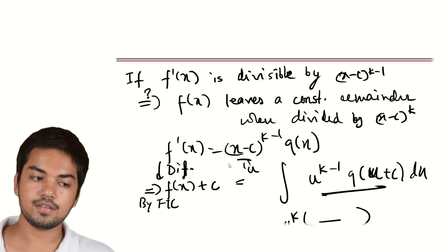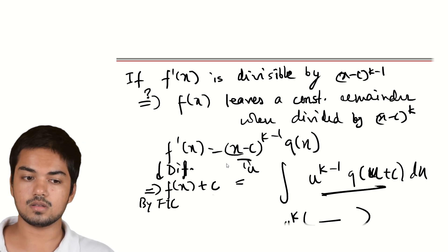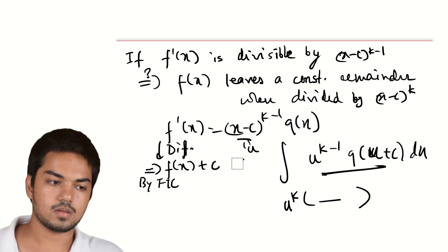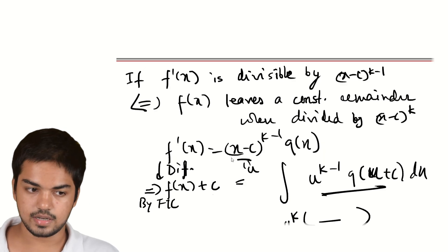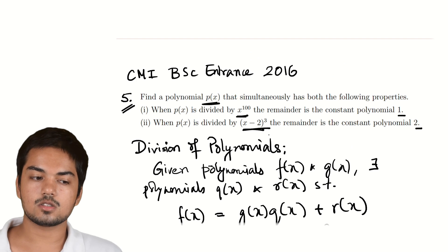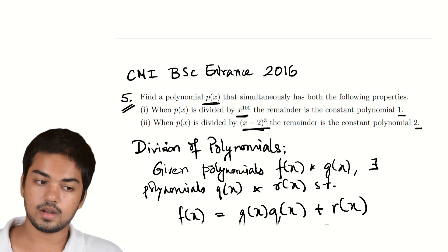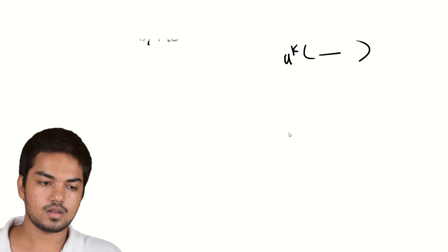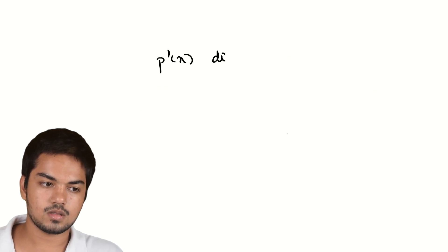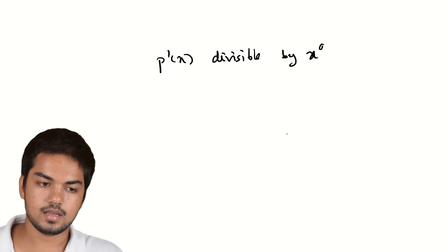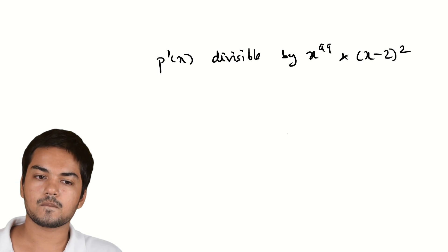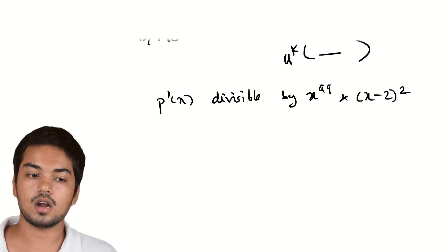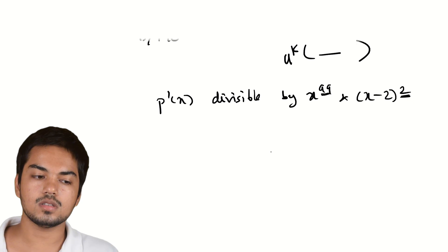So now we have a criterion: if we want f(x) to leave a constant remainder when divided by (x−c)^k, we just need f'(x) to be divisible by (x−c)^(k−1). It's an if-and-only-if condition. Going back to the problem, p(x) needs to leave constant remainders when divided by x^100 and (x−2)^3. So we want p'(x) to be divisible by x^99 and (x−2)^2.